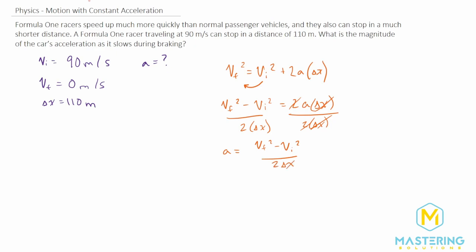And they tell us that the final velocity, we're stopping right, so that will be zero. So let's get rid of that. So now we can simplify it a little bit further then. The negative initial velocity squared divided by two delta x will give us what the acceleration is.